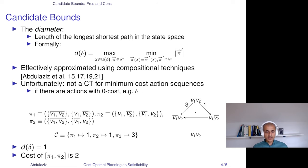Unfortunately, though, the diameter is not a CT for minimum cost action sequences if there are actions with zero costs, because there is no longer a clear relationship between the plan length and cost. Cheaper plans could be arbitrarily longer than the shortest plan. For instance, in this example here, we have three actions: pi one, pi two, pi three. The cost of pi one is one, two is one, and three is three. The diameter of the system is one because you can reach any state from any other state in one transition if you can ever reach it. But the cost of the cheapest action sequence that can take you from this state to that state is two, while the cost of the longest action sequence whose length is bounded by the diameter is three.